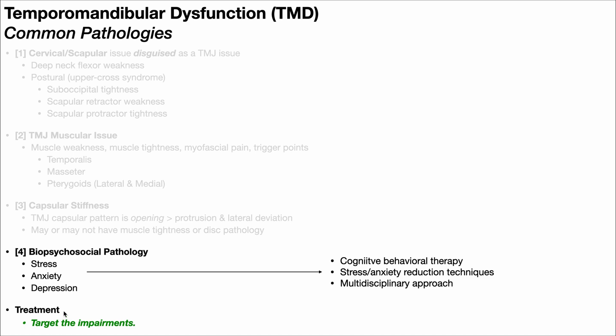Finally, especially with TMD, it cannot be emphasized enough: find the specific impairments and target those impairments. There is no cookie-cutter recipe approach for TMD. Every TMD patient is going to be a little different — some may have disc pathology and some may not. Within those patients, there will be a scattering of all the things we just talked about. In the next few videos, we'll be going over other pathologies that pertain to the articular disc.